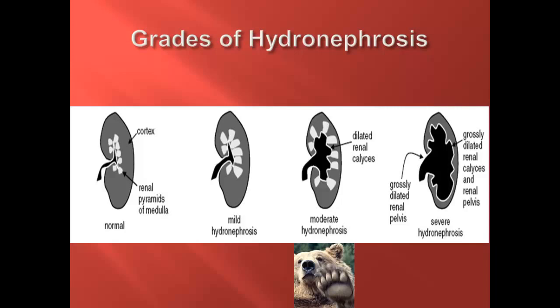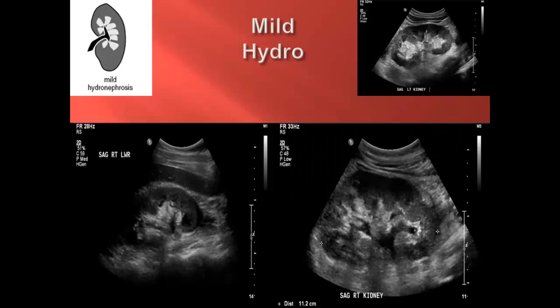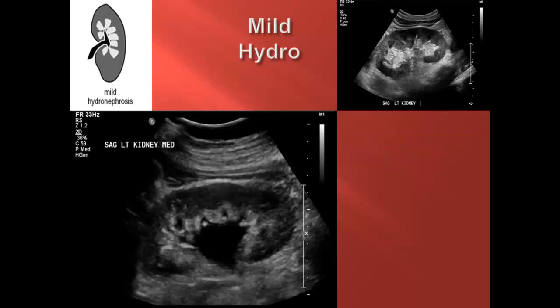Now let's look at a few examples of the different grades of hydronephrosis on ultrasound. Here we have two examples of mild hydronephrosis in the bottom half of the page and a normal kidney for comparison in the upper right corner. Notice the mild central dilation of the predominantly hyperechoic sinus. Comparing the sonographic appearance of mild hydro to that of a normal kidney, one can appreciate that the renal architecture is undisturbed for the most part. Here we have a more prominent example of mild hydronephrosis, and you can appreciate the significant central dilation of the hyperechoic renal sinus.